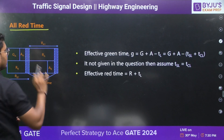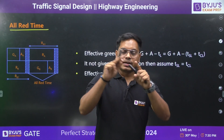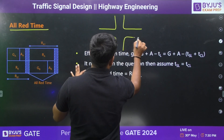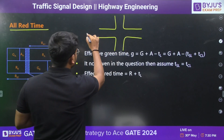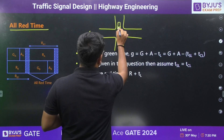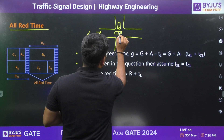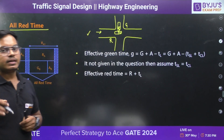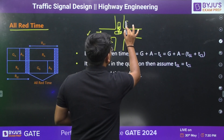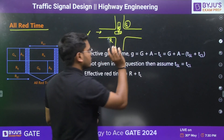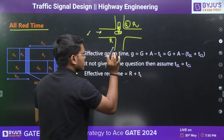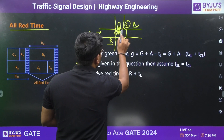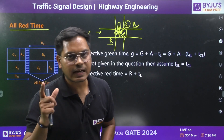Apart from this, there is one more thing called all red time. Suppose the green light is on for one road and the red light is on for another. A vehicle from the green road is in the intersection just as the other road's light turns green — they could collide. To avoid this, the second road's light does not immediately turn green. For a certain duration, both roads have red lights — so that we can clear the intersection. That time duration for which all roads show red is called all red time.